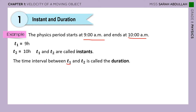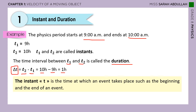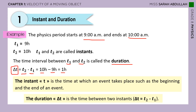The time interval between T1 and T2 is called a duration. For example, the physics period starts at 9 and ends at 10 — how long is it? You subtract 10 minus 9, which equals 1 hour. So this is the duration; we call it delta T. Delta T equals T2 minus T1. The instant T is the time at which an event takes place, such as the beginning or end of an event. The duration is the time between two instants: delta T equals T2 minus T1.